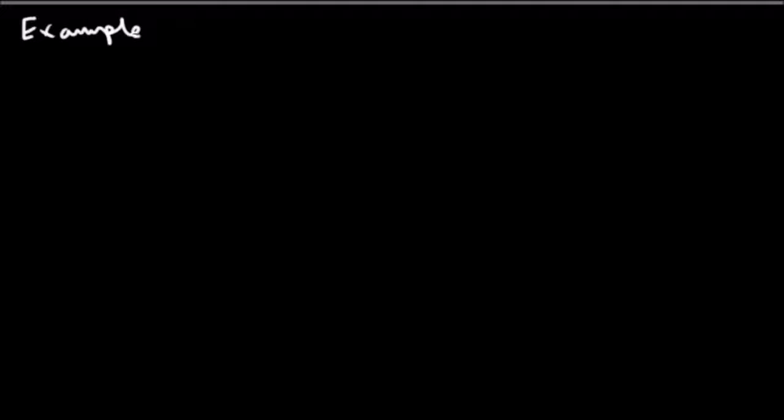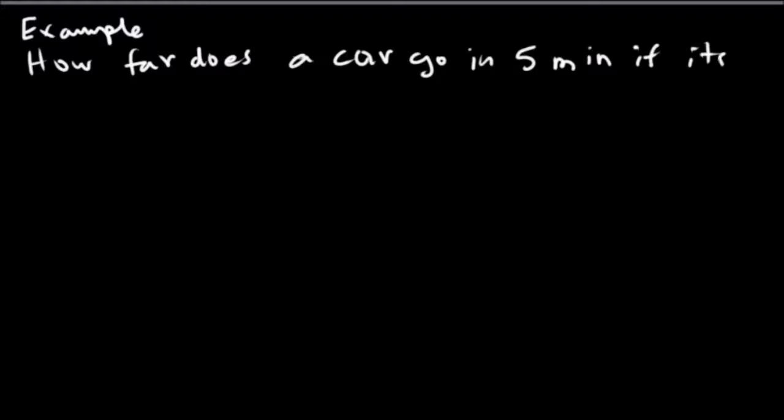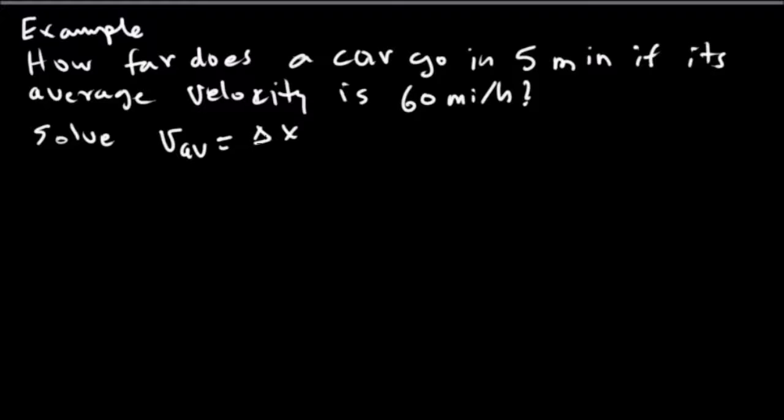How far does a car go in 5 minutes if its average velocity is 60 miles per hour? So there's our question. My guess is it's going to involve some units. We want to solve this. We do know our velocity average is going to be equal to delta x divided by delta t. In this case we want to know delta x.